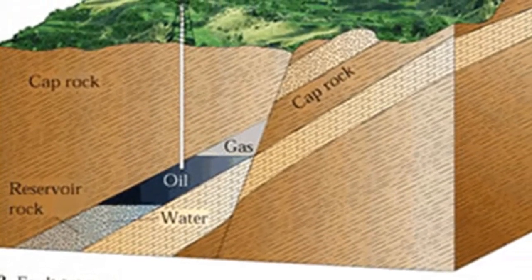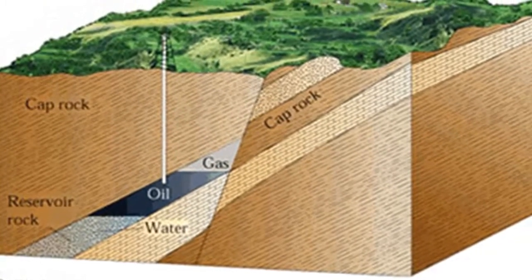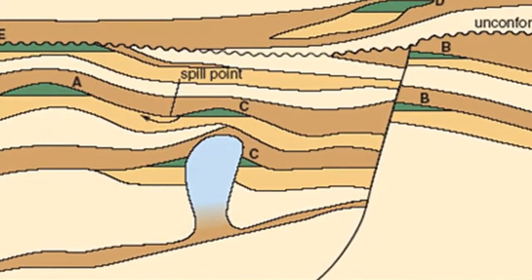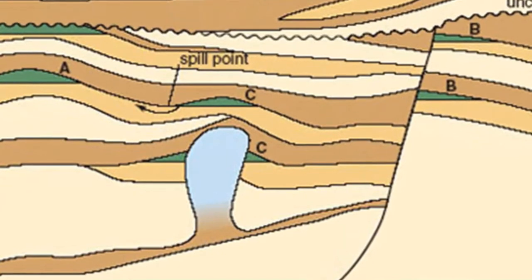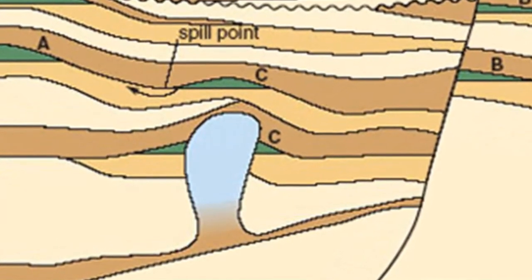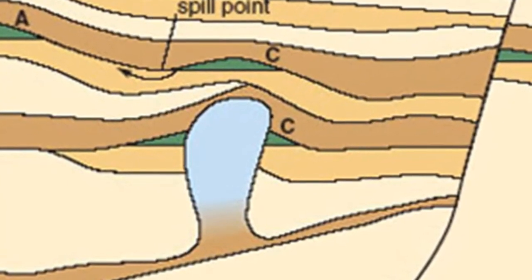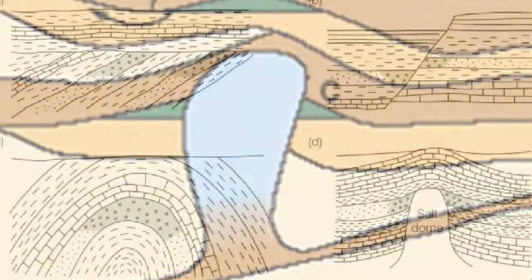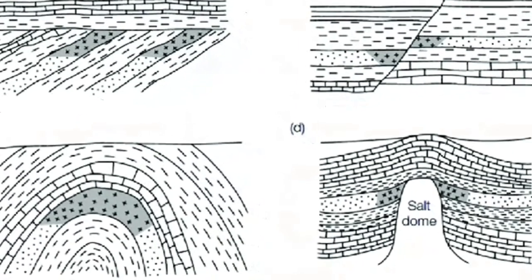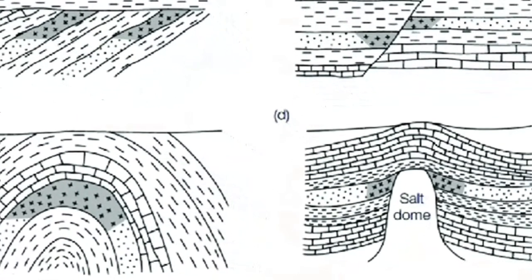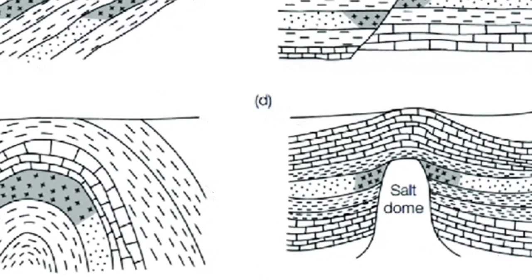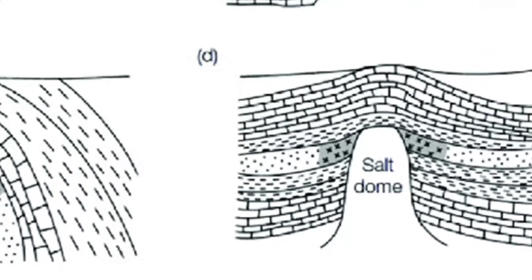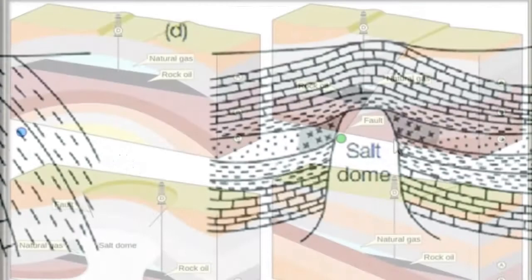In the Gulf Coastal Plain region of the United States, important accumulations of oil occur in association with salt domes. Such areas have thick accumulations of sedimentary strata, including layers of rock salt. Salt occurring at great depths has been forced to rise in columns by the pressure of the overlying beds. These rising salt columns gradually deform the overlying strata. Because oil and gas migrate to the highest level possible, they accumulate in the upturned sandstone beds adjacent to the salt column.